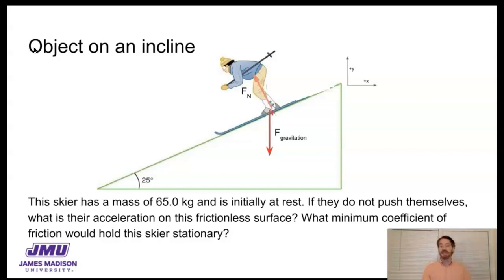And then the second part of the question: what minimum coefficient of friction would be necessary to hold this skier stationary?